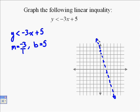Next, we decide that it's a dotted line. We know it's a dotted line because it's just less than. Less than or equal is a solid line. Less than is a dotted line.